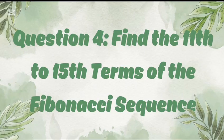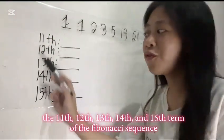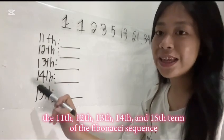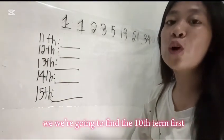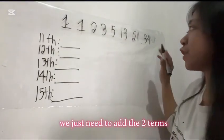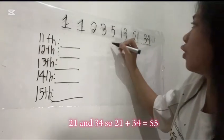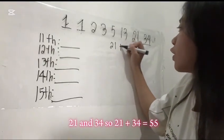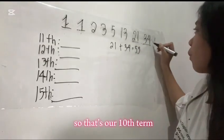Question number 4. Find the 11th to 15th terms of the Fibonacci Sequence. We're going to get the 11th, 12th, 13th, 14th, and 15th terms. But before that, we need to find the 10th term first. We just need to add the two terms, 21 and 34. So, 21 plus 34 equals 55. That's our 10th term.